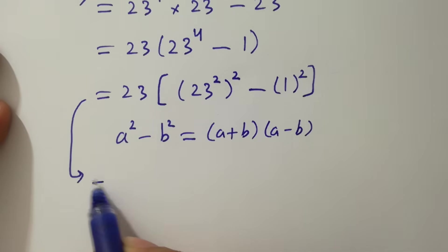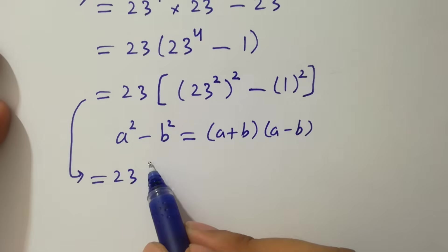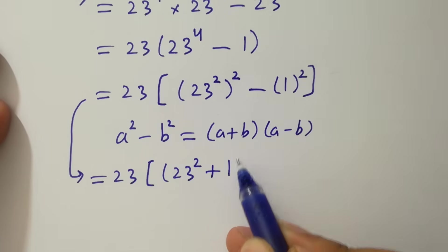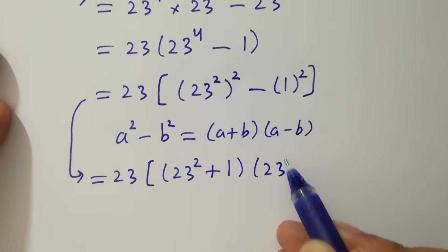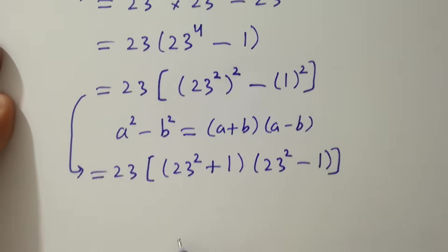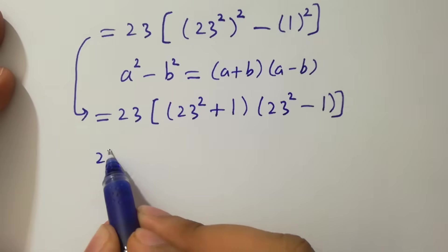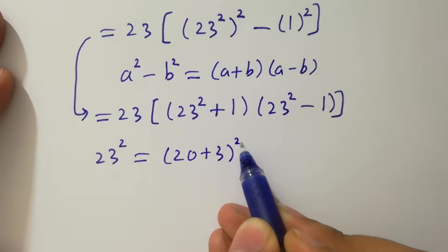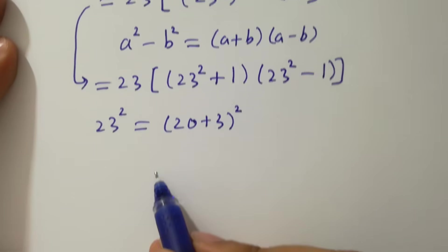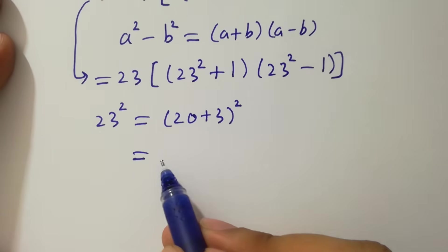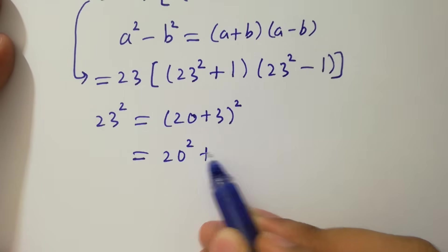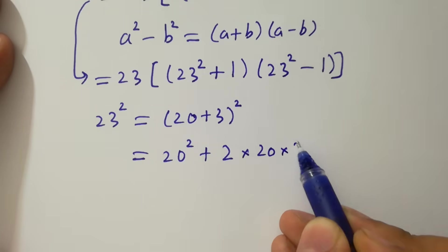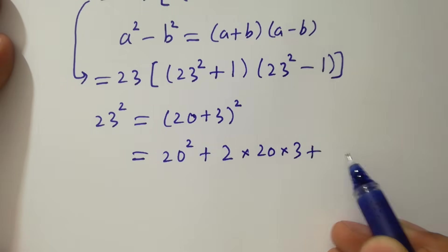it becomes 23 times (23 squared plus 1)(23 squared minus 1). Now, 23 squared equals (20 plus 3) whole squared. Applying the formula (a plus b)² equals a squared plus 2ab plus b squared, we get 20 squared plus 2 times 20 times 3 plus 3 squared.